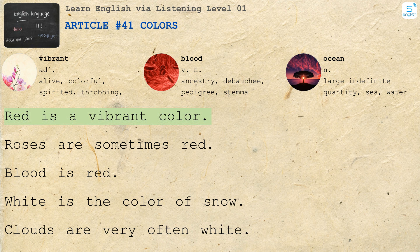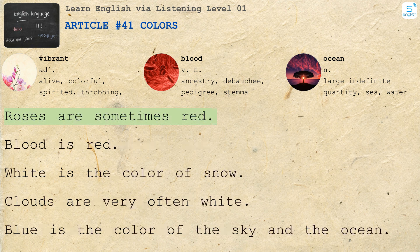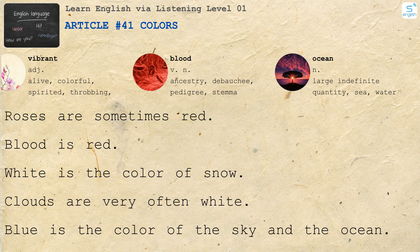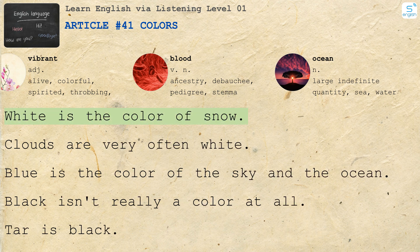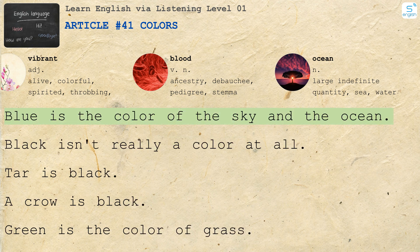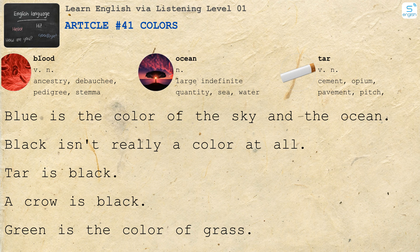Red is a vibrant color. Roses are sometimes red. Blood is red. White is the color of snow. Clouds are very often white.